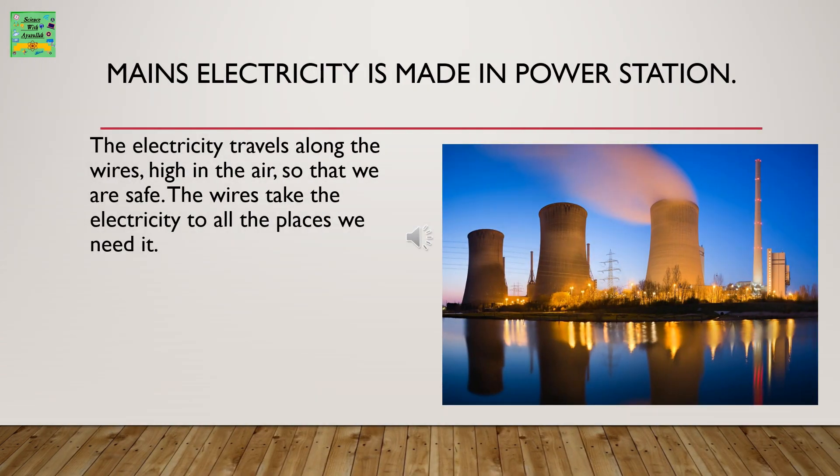Mains electricity is made in a power station. The electricity travels along wires high in the air so that we are safe. The wires take the electricity to all the places we need it.